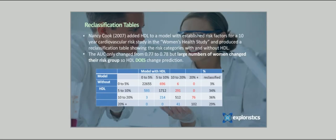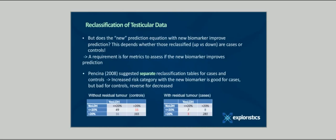The change in AUC is only from 0.77 to 0.78, but let's look at the table. We see in row one, denoted 0 to 5 percent, those patients whose risk without HDL was less than 5 percent. However, 696 of those patients have their estimate increased to the 5 to 10 percent group when HDL is considered. These patients who are reclassified up are in red. For those in the 5 to 10 percent group without HDL, we see that even more, 34 percent, reclassified. Some upwards, 291, presumably those with bad HDL, and some downwards, 593. So the new biomarker can change prediction relative to risk categories, at least in this case. Does the new prediction equation with the new biomarker improve prediction? This depends whether those be classified up or down are cases or controls. A requirement is for metrics to assess if new biomarkers improve prediction. So if a new biomarker gives a patient a higher risk estimate, this is good if the patient actually does turn out to have the event. And the reverse for controls.